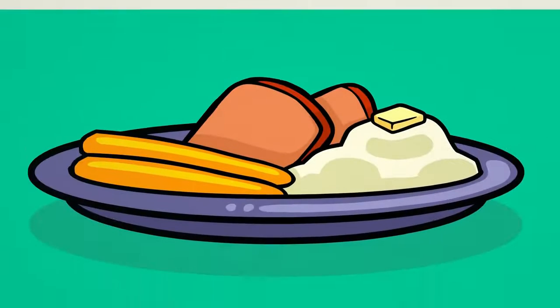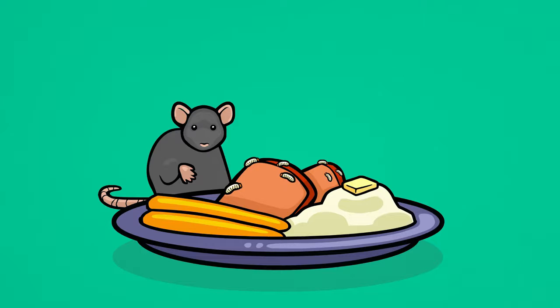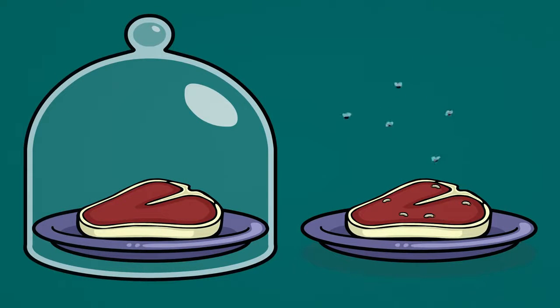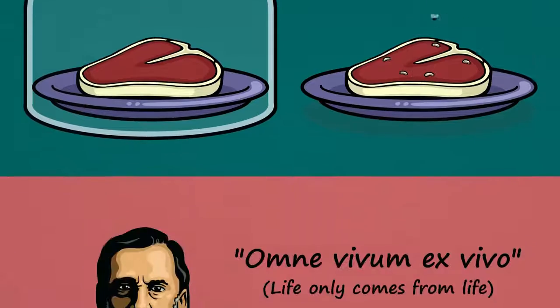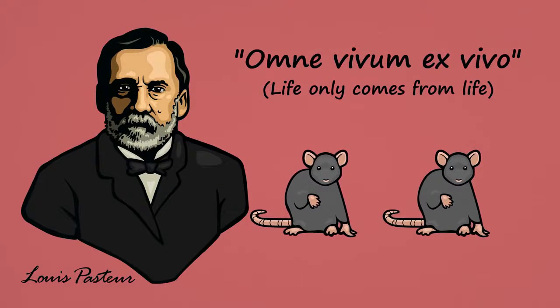It was once believed that if you left food out to rot, living creatures like maggots and even rats would simply poof into existence. The idea was called spontaneous generation. A series of experiments starting in the 1600s disproved this idea, and in the 1800s, a new scientific law was proposed: Life only comes from life.